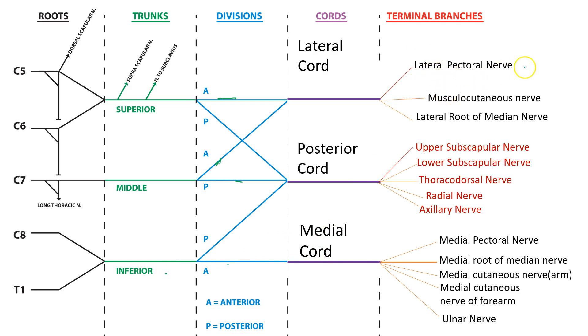That is lateral pectoral nerve, musculocutaneous nerve and lateral root of median nerve. Upper subscapular nerve, lower subscapular nerve, thoracodorsal, radial nerve and axillary nerve. And here we have medial pectoral nerve, medial root of median nerve, medial cutaneous nerve of arm, medial cutaneous nerve of forearm and the ulnar nerve.